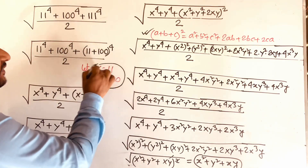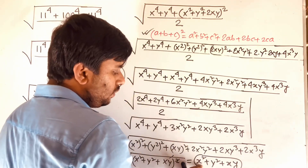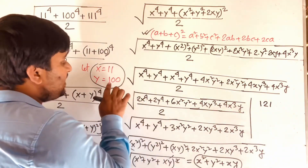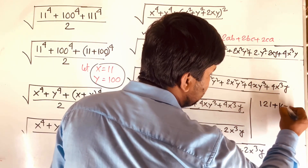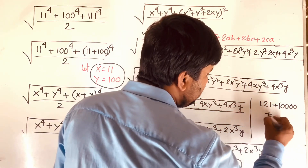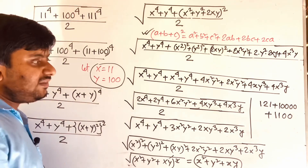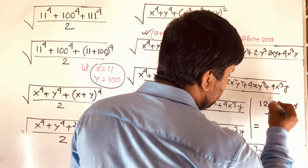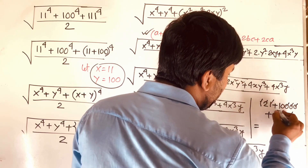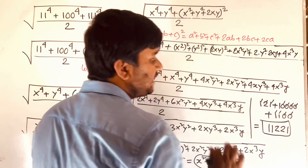We remember that x equals 11 and y equals 100. So x squared is 11 squared which equals 121, and y squared is 100 squared which equals 10,000, and 2xy is 2 times 100 times 11 which equals 2,200. Adding these together: 121 plus 10,000 plus 2,200 gives our final answer of 12,321.